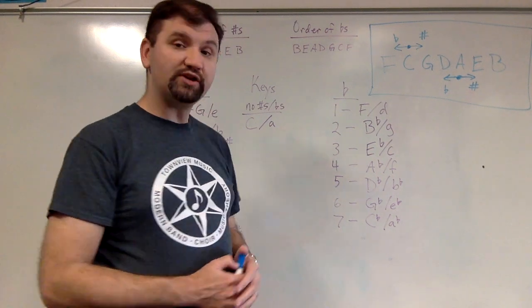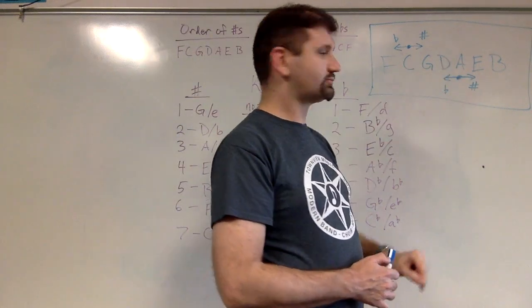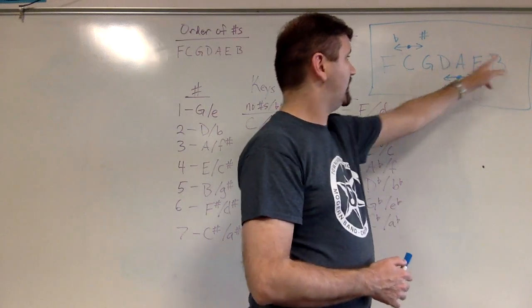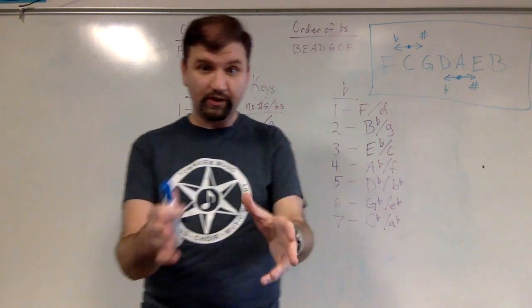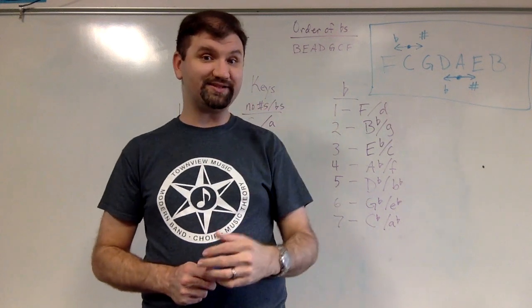For example, the major key with three sharps, one, two, three, A. The minor key with three sharps, one, two, three, F sharp. Now we can realize that A and F sharp share the same key signature, what we call relative keys.